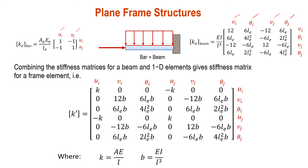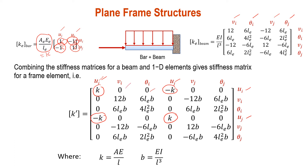In this case, we can see that AE over L equals K. For example, the first term is K, negative K, negative K, K. So for UI and UI, we have K. For UI and UJ, we have negative K. For UJ and UI, we have negative K. And the last one, between UJ and UJ, is K. K_bar is not related to V and theta, which is why all those values are zero.